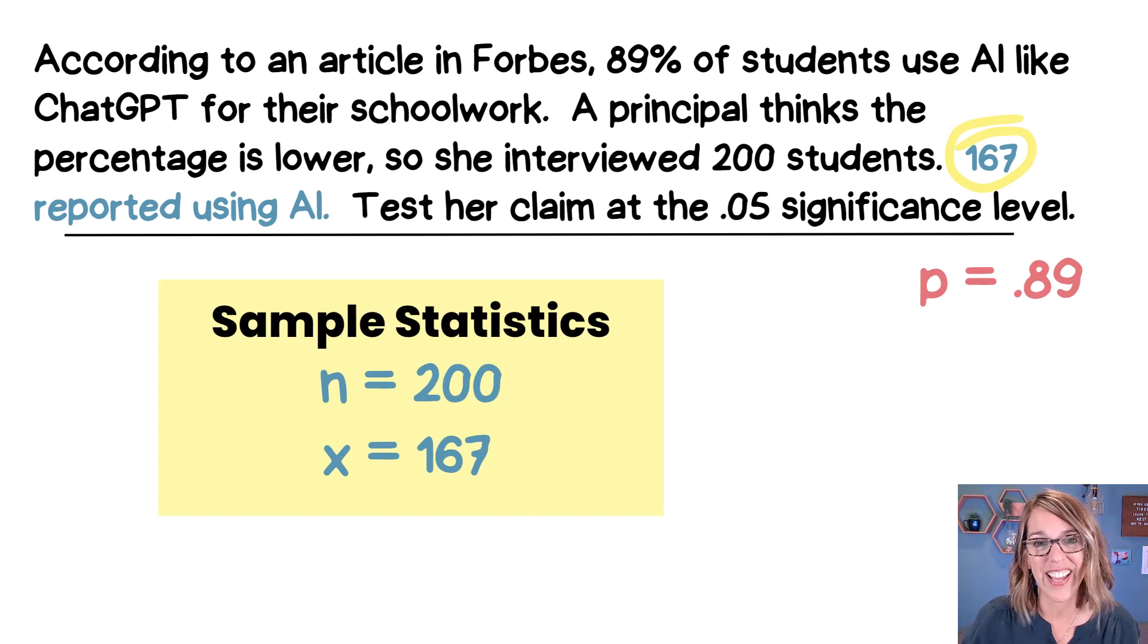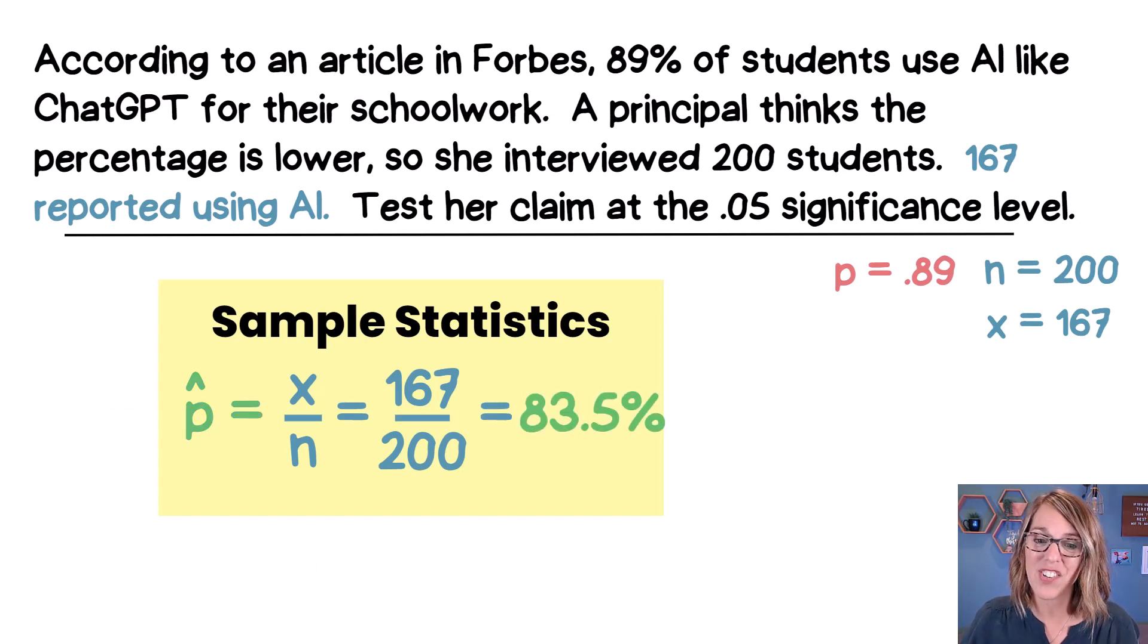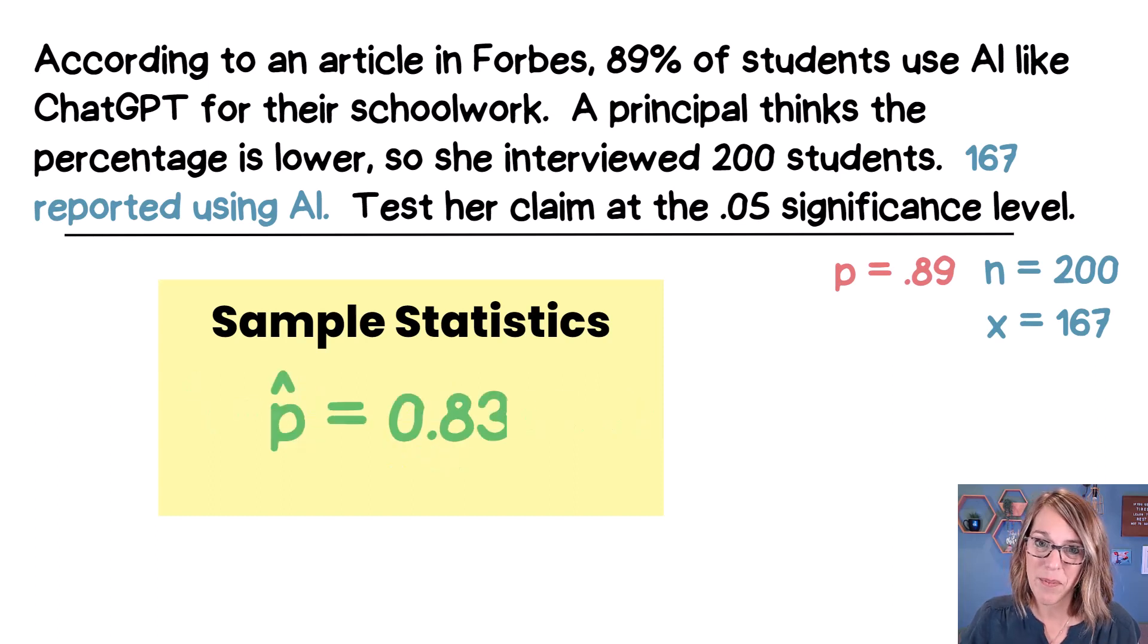Now the two of these together give us our sample proportion, which we call P hat. The little V on top of it is a hat. So X out of N, for us, that's going to be 167 out of 200, and we found a percentage of 83.5%. So for her sample, P hat, our sample proportion is 0.835.